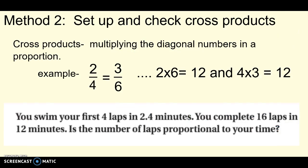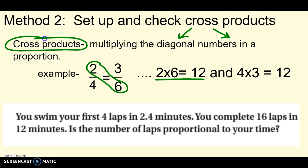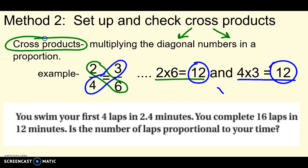Method 2 is to set up and check cross products. A cross product is when you multiply the numbers that are diagonal — kitty corner — to each other in a proportion. Here's the example: 2 fourths and 3 sixths. I multiply the diagonals: 2 times 6 gives 12, and 4 times 3 also gives 12. If you get the same answer for both cross products, then yes, they are proportional. Copy that example down on your paper.